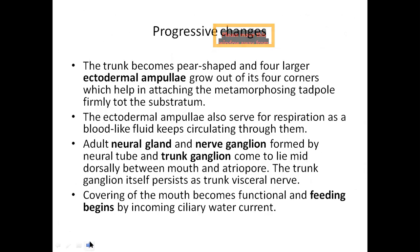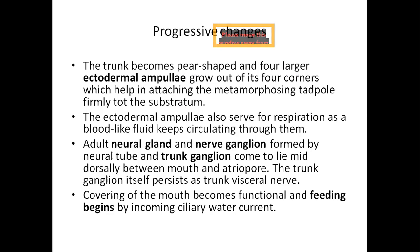Apart from the retrogressive changes — the disappearance of major structures present in the active larva — there are also progressive changes that appear in the adult. The trunk becomes ear-shaped, and ectodermal ampullae grow out forming four projections which help in attaching the adult to the substratum during metamorphosis. The ectodermal ampullae also help in respiration during metamorphosis because there is continuous circulation of fluid through these ampullae.